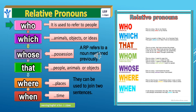After possessive pronouns, we come to relative pronouns. The word itself is very suggestive — it shows the relation. A relative pronoun refers to a noun mentioned previously; when you want to refer back to a noun, you use the relative pronoun. There are different types: who, which, that, whose, where, when. Who is used to refer to people; which is referred to animals, objects, or ideas. Now these two are very confusing — students often make mistakes here.